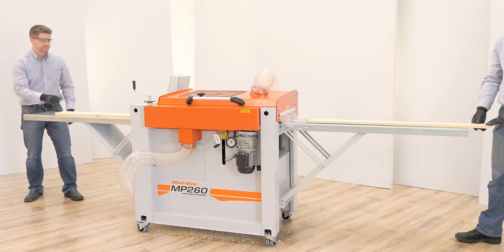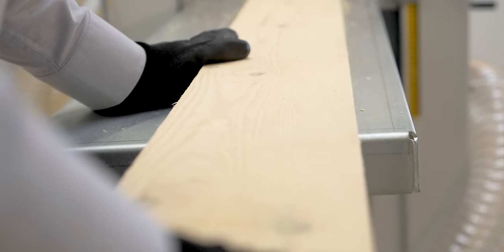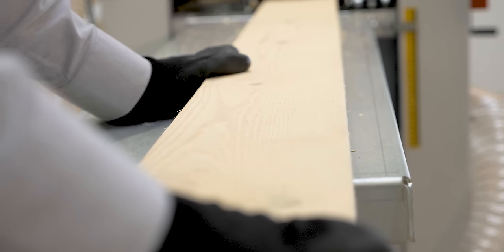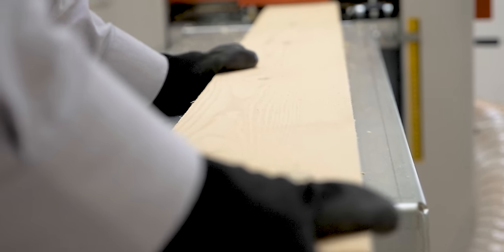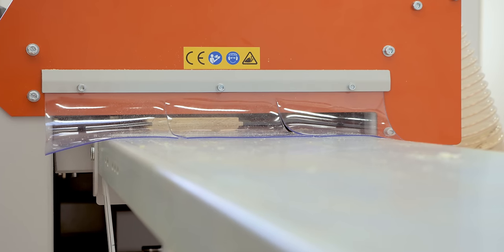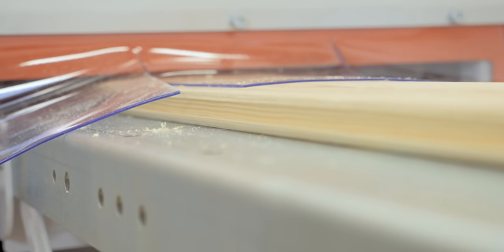The MP260 handles everything from simple planing all the way up to large four-sided moldings. Rough sawn boards go in, and four-sided planed and molded boards are produced in one pass.